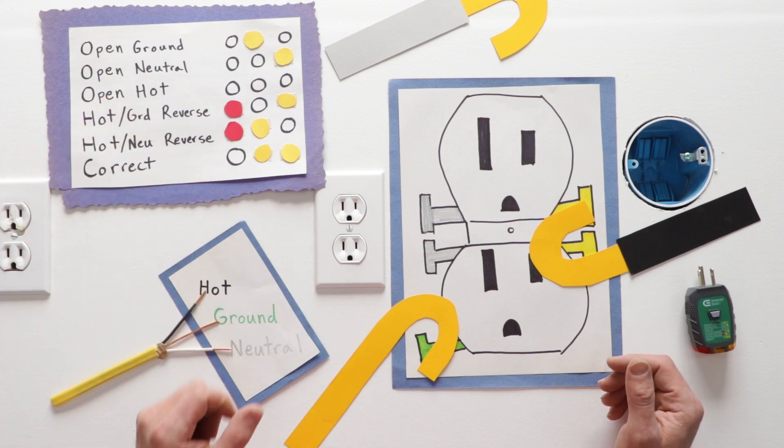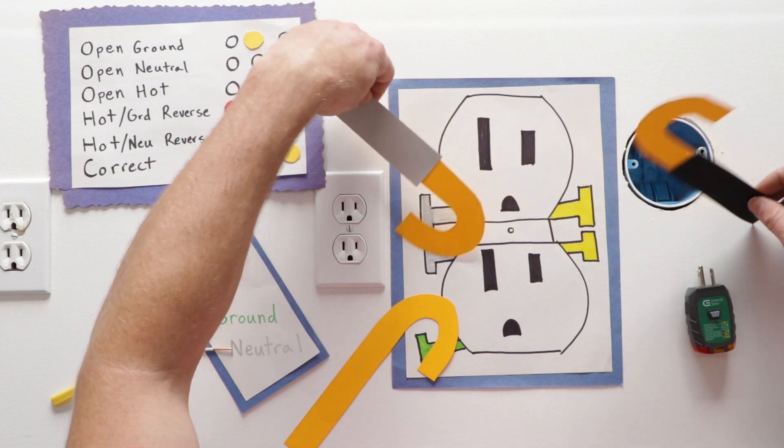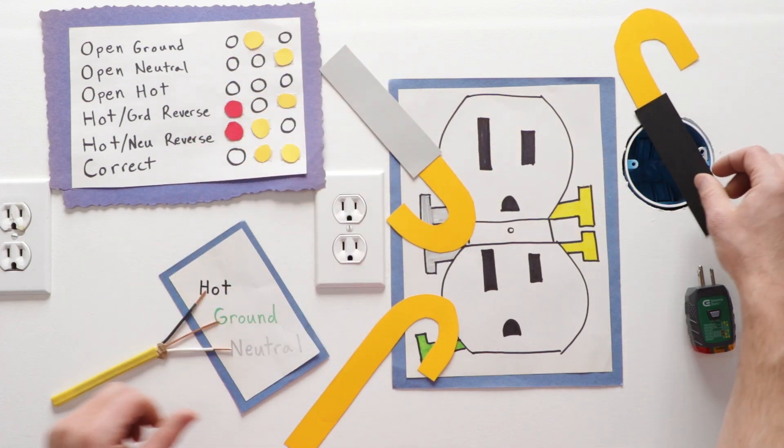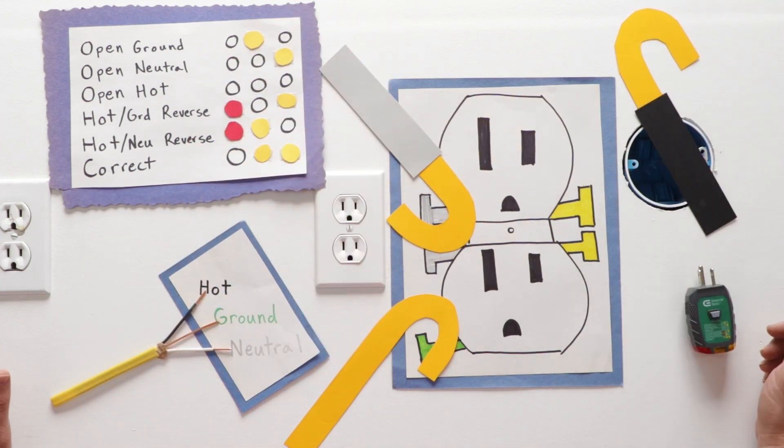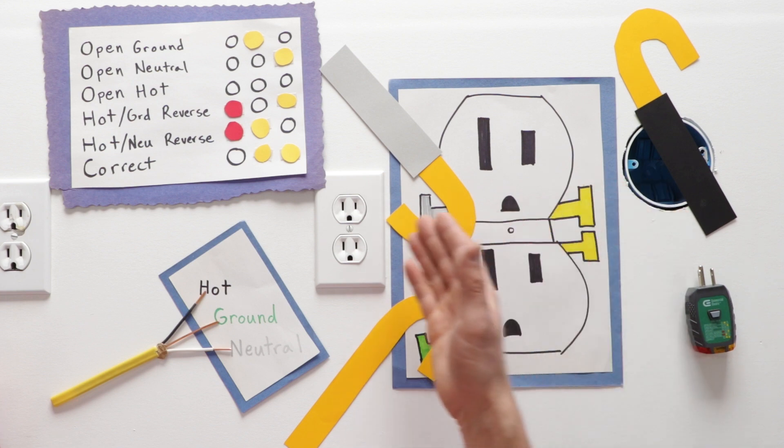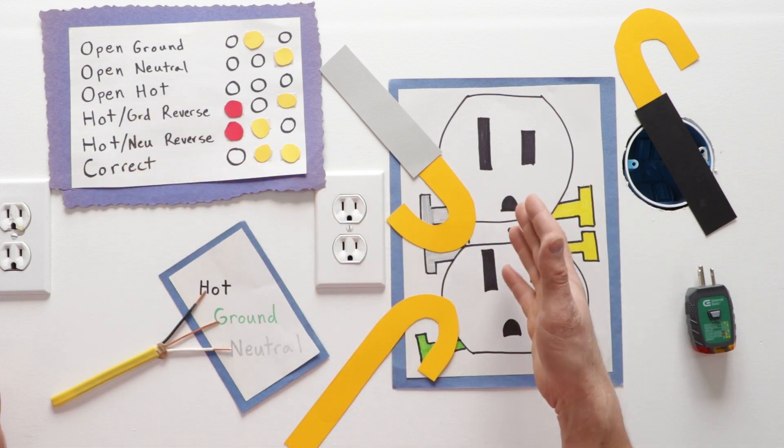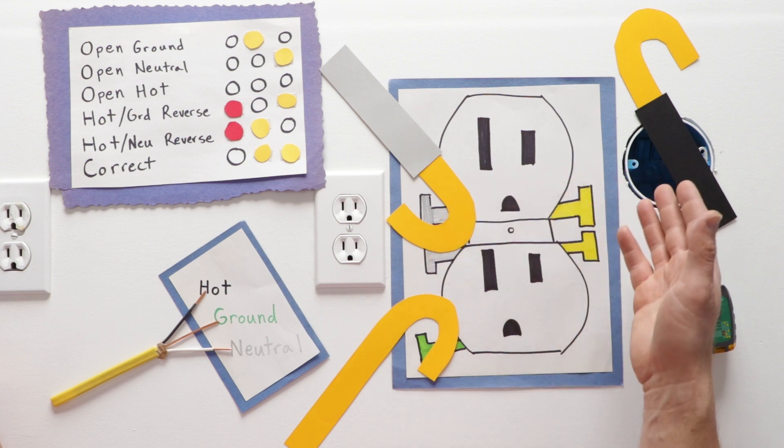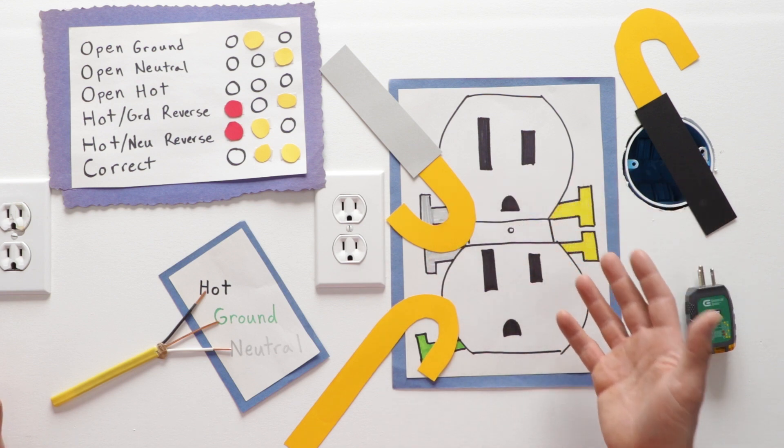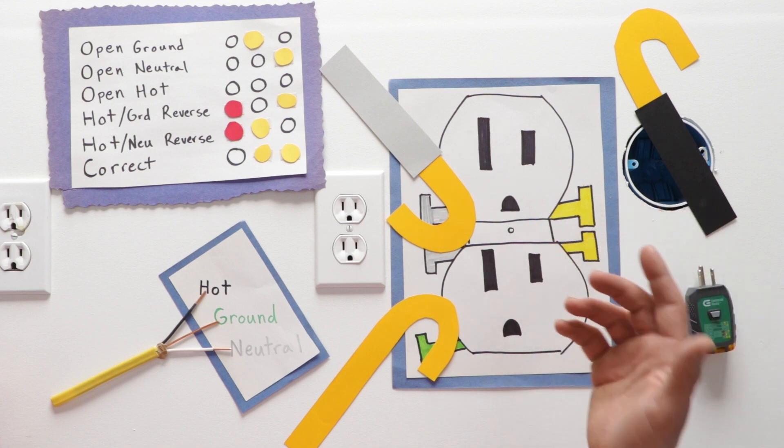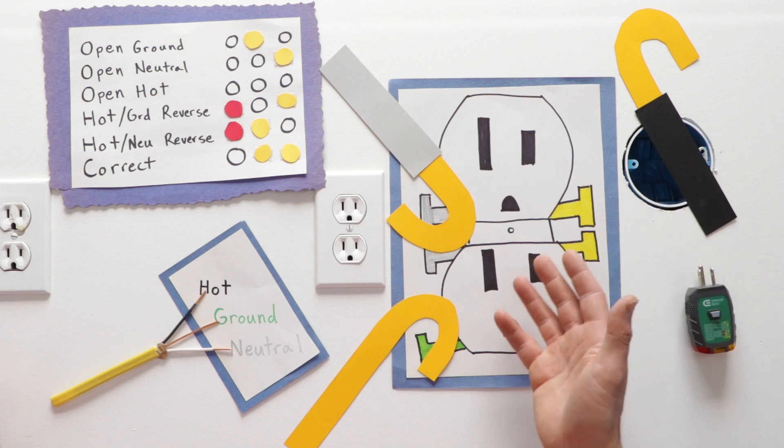Next, we have open hot. That means the hot's not connected. This also could be that there is no power coming to this receptacle because without the hot, there would be no power. So if your receptacle's on a switch or your breaker is tripped, there will also be no electricity.